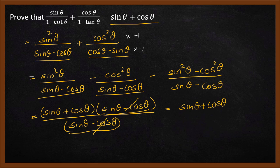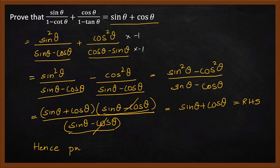Sine theta plus cos theta is the right hand side, which is what we wanted. So that is the right hand side, because we started with the left hand side and showed it equals the right hand side — hence proved. Hopefully you saw how these kinds of problems can be solved. My suggestion is: whenever you have cot and tan, replace them with sine and cos — if the other terms are sine and cos — then simplify and you should be able to solve these problems. In future videos we will solve different problems. Till then, bye. Take care.